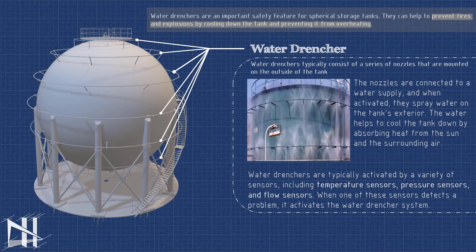Water drenchers are an important safety feature for spherical tanks. They can help to prevent fires from spreading and causing damage to the tank and its contents. In addition to fire suppression, water drenchers can also be used to cool the tank and prevent it from overheating. This is important in hot climates or when the tank is storing flammable materials.